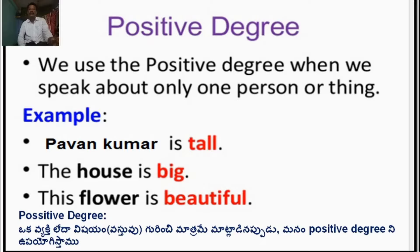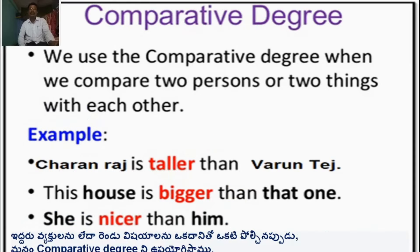We use the comparative degree when we compare two persons or two things with each other. The definition is very easy — we compare two persons or two things with each other. For example: This house is bigger than that one. She is nicer than him.